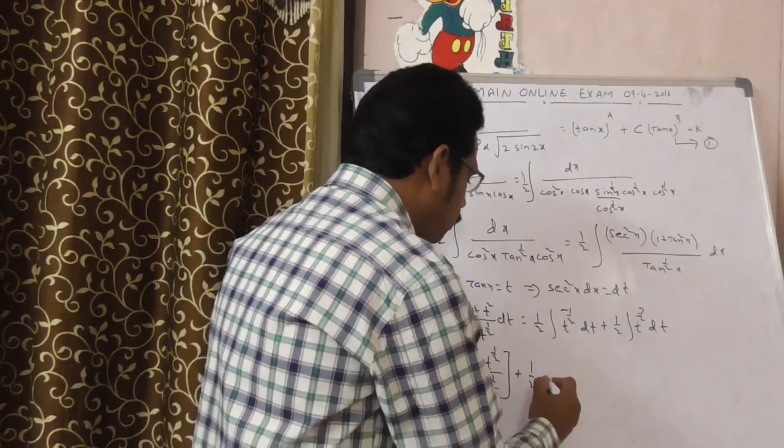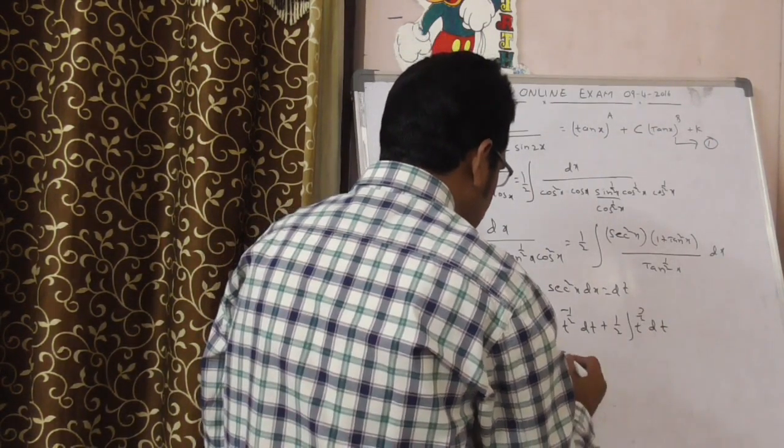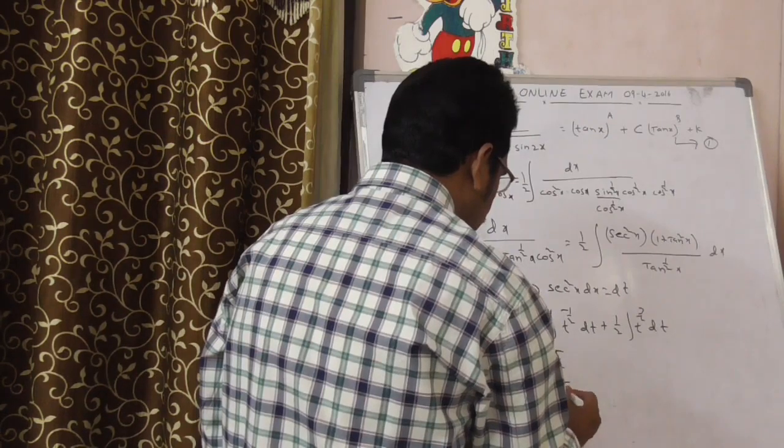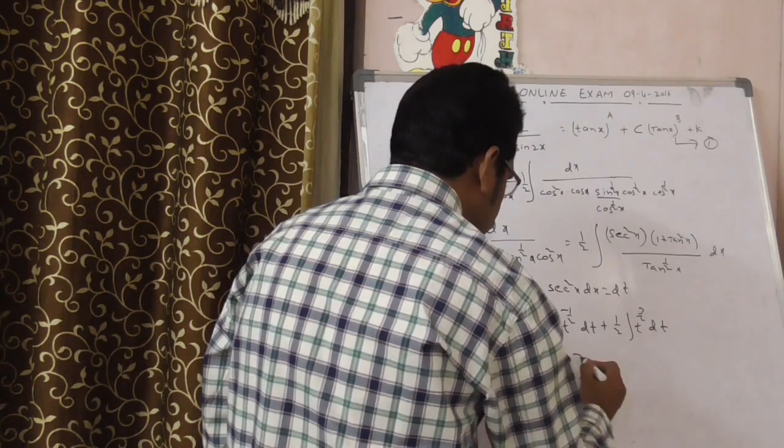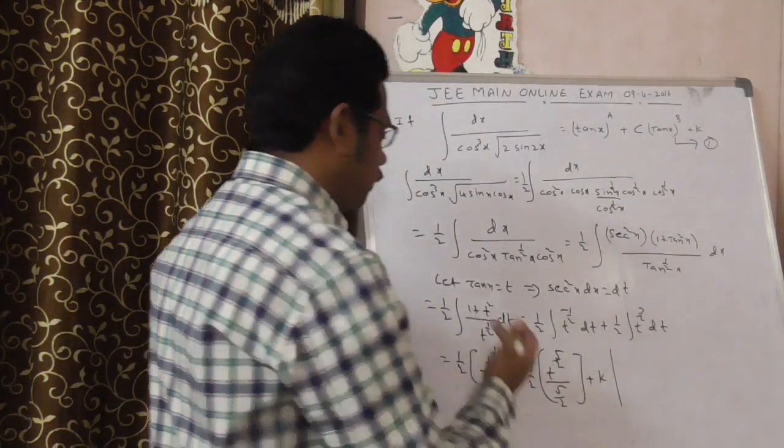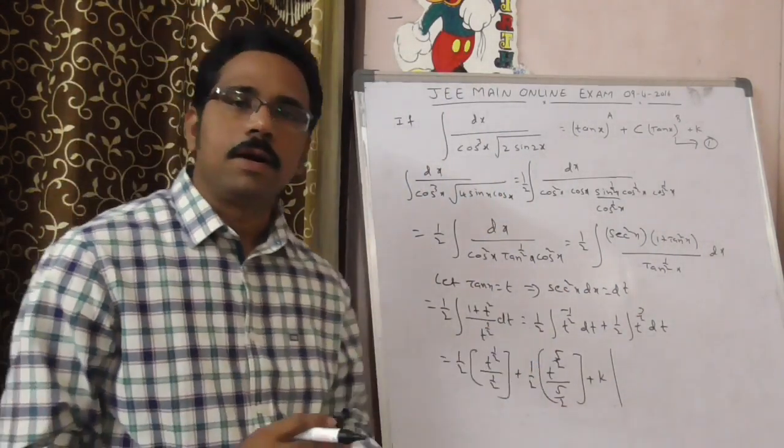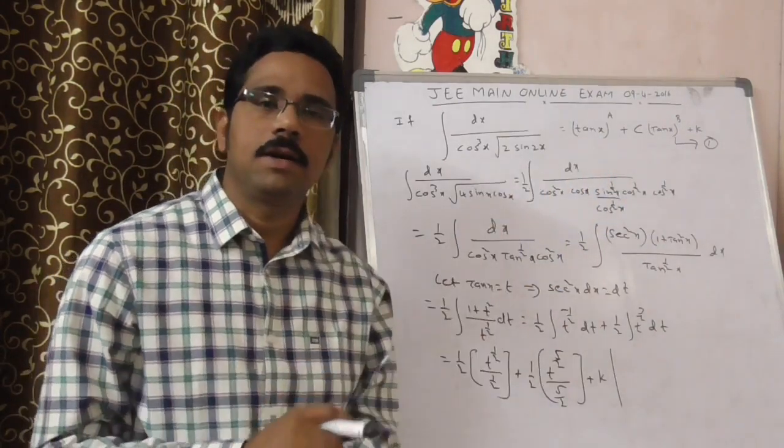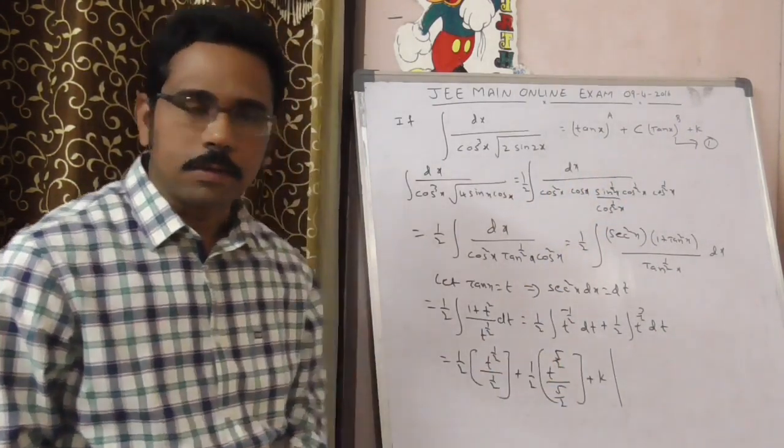Very good. Plus 1 by 2 of integral, this is t power 5 by 2 by 5 by 2, that is 3 by 2 plus 1 is 5 by 2 plus k. After integration, completion of integration, you put a constant. Already given the integral constant is k, same I am writing here.